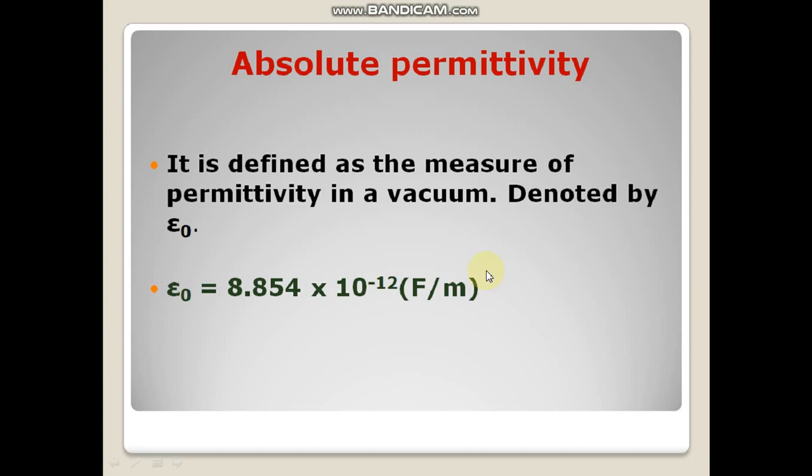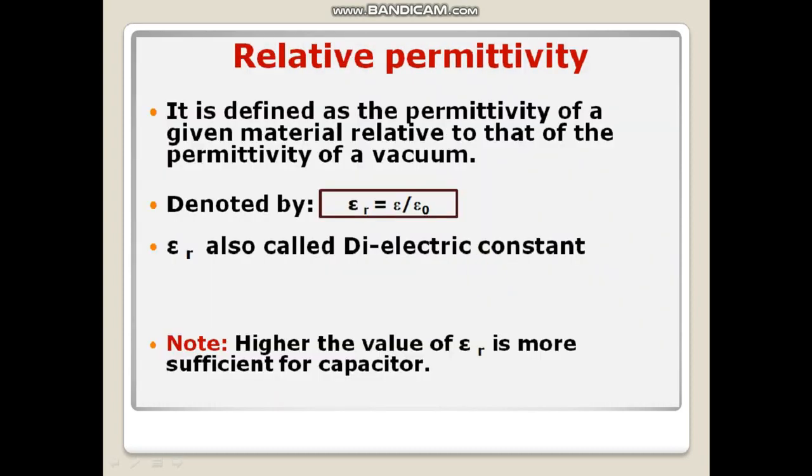Next, relative permittivity. It is defined as the permittivity of a given material relative to that of the permittivity of a vacuum, and it is denoted by epsilon_r equals epsilon divided by epsilon_0. Epsilon_r is also sometimes called the dielectric constant. Here we should remember that the higher the value of relative permittivity, the more sufficient for the capacitor.